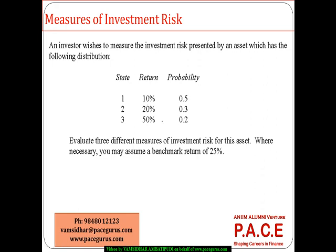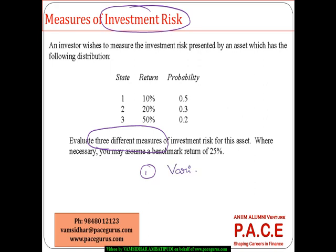Now let us look at some of the common measures of investment risk. In the initial stages, I will talk about three important measures which are quite basic in nature. One is variance, two is semi-variance, and three, I will talk about shortfall probability.